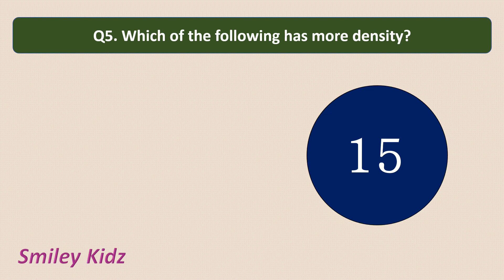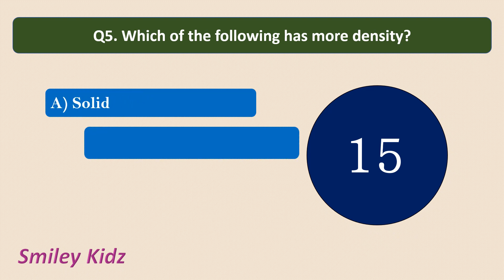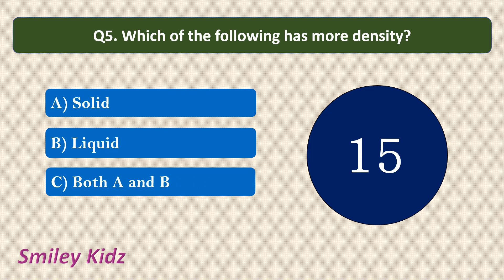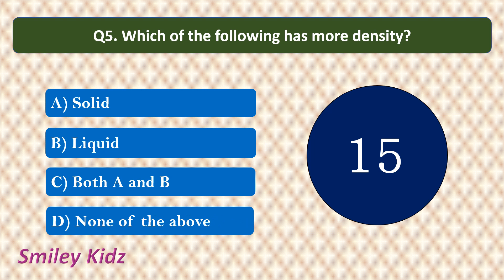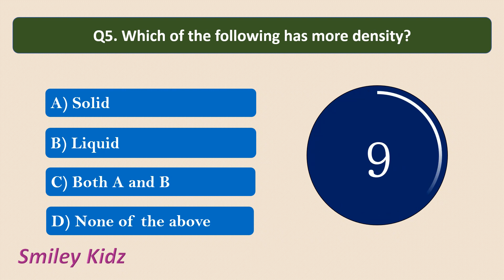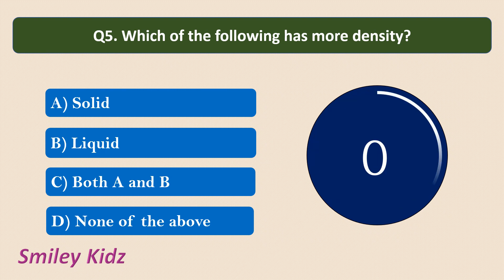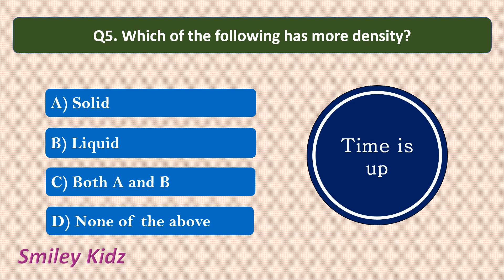Question number 5. Which of the following has more density? Your options are Solid, Liquid, Both Solid and Liquid (both A and B), or None of the above. Your time starts now. Your time is up and the correct answer is Solid. Solids have more density than liquids.